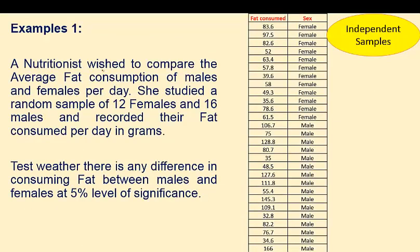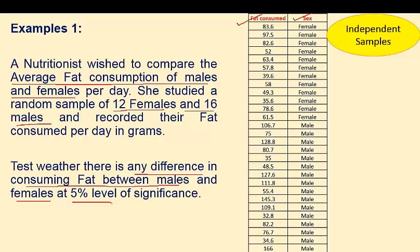First example: a nutritionist wishes to compare the average fat consumption of males and females. The variable of interest is fat consumption, tested across two groups — males and females — per day. She studied a random sample of 12 females and 16 males. This is the data you can see: fat consumed is the variable of interest, and the two groups are sex: male and female. We want to test whether the average fat consumption for males is equal to that of females.